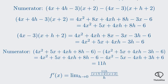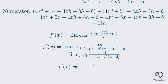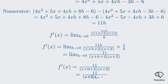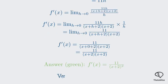We can rewrite the division by h as multiplication by its reciprocal, 1 over h. When we do this, the h in the numerator and the h in the denominator cancel each other out. Now we can safely substitute h equals 0 without causing division by 0. This leaves us with 11 divided by the product of x plus 2 and x plus 2, which simplifies to our final answer: 11 divided by the quantity x plus 2 squared. The memo also gives 11 over x plus 2 squared, so our answer is verified.